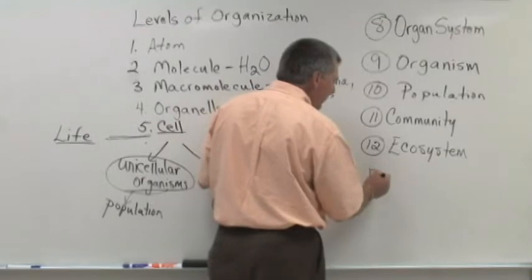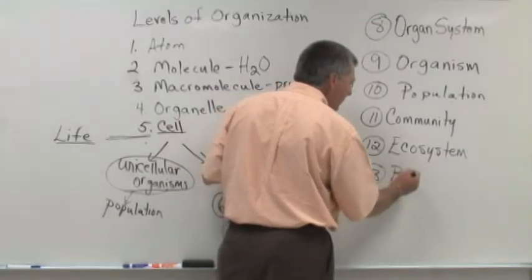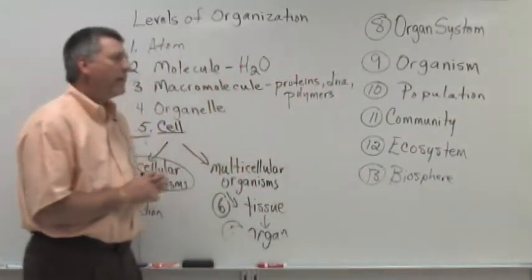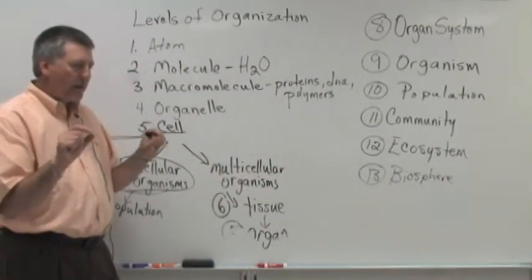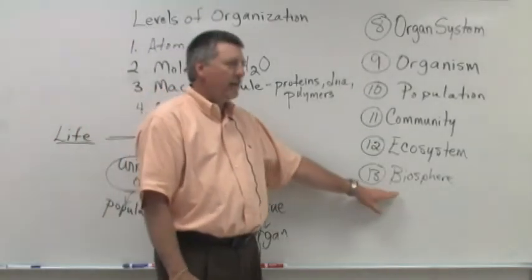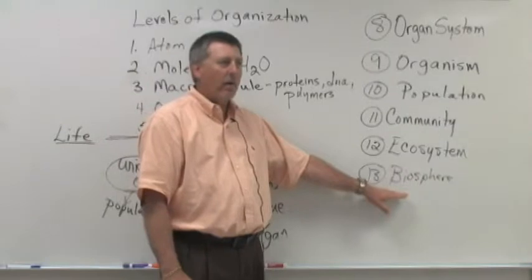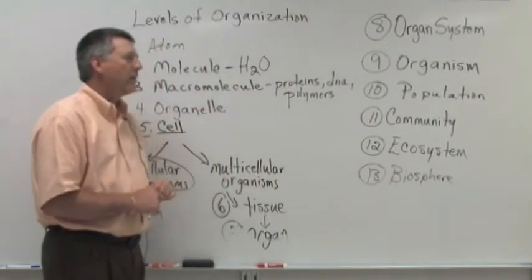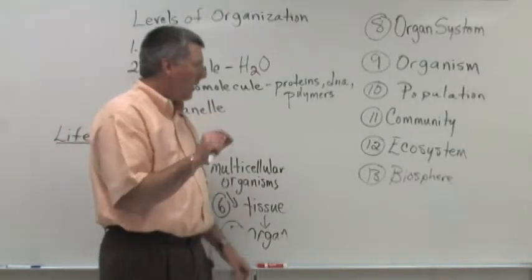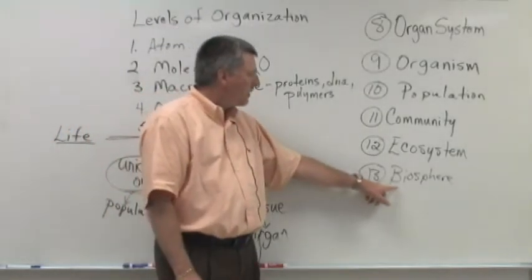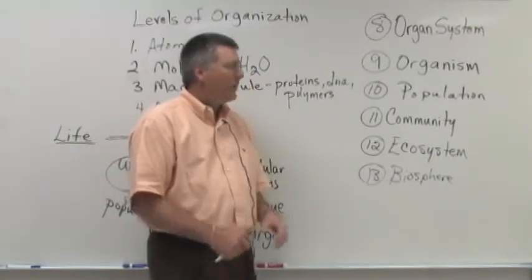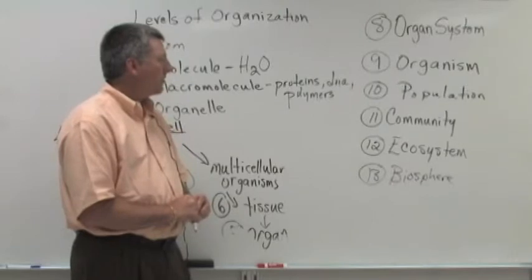The final level of organization is the biosphere. The biosphere refers to that thin layer on Earth as far down in the soil as we have to go to find the deepest living organism, and as far up in the atmosphere as we have to go to find the highest living organism. But that thin layer on Earth where life exists is what we refer to as the biosphere, and of course that's composed of many different kinds of ecosystems.